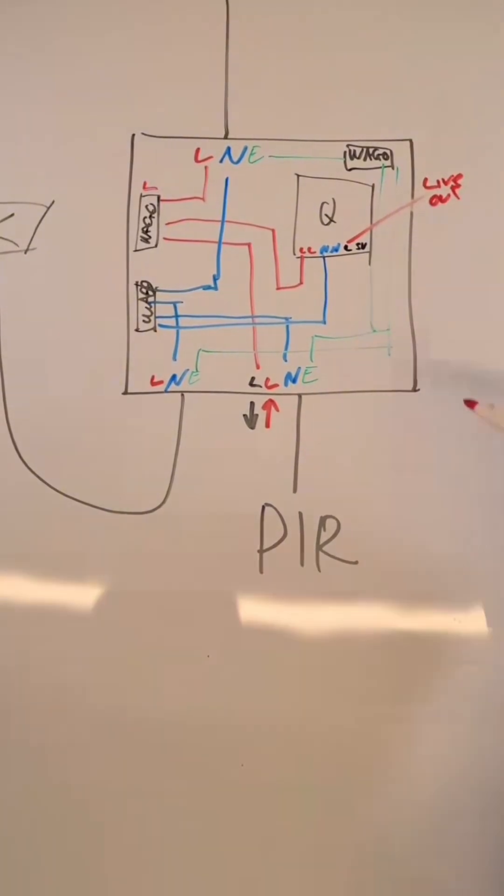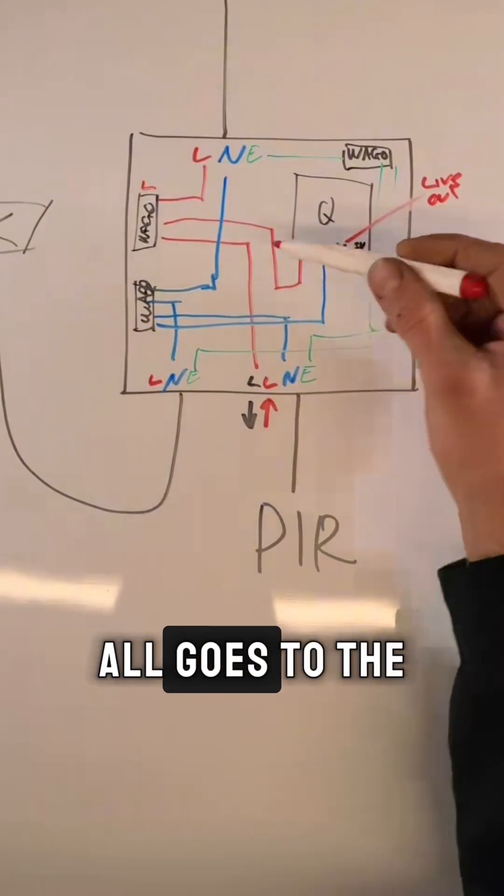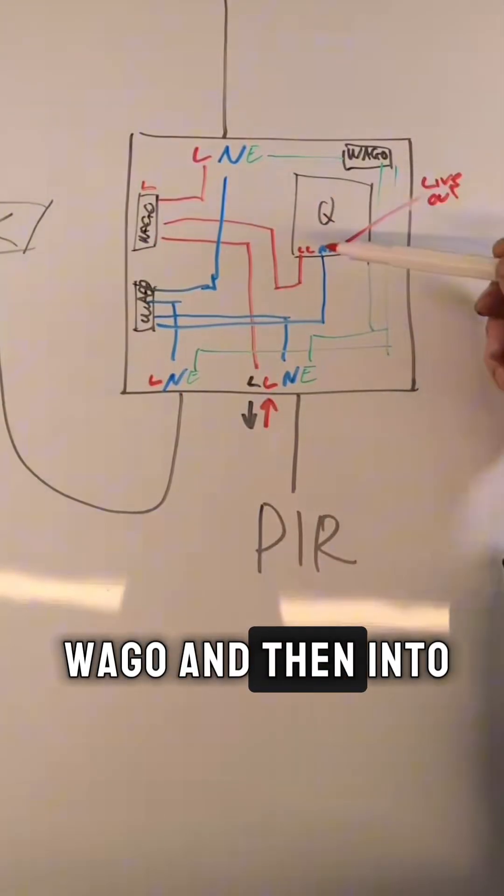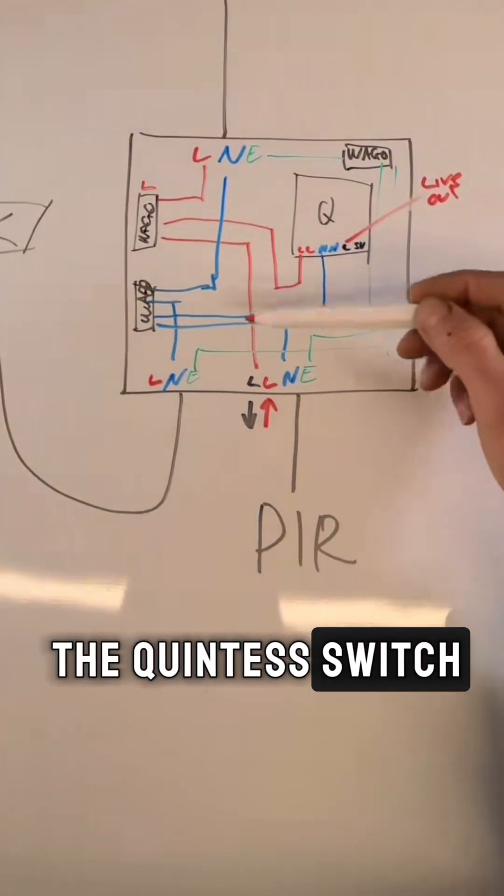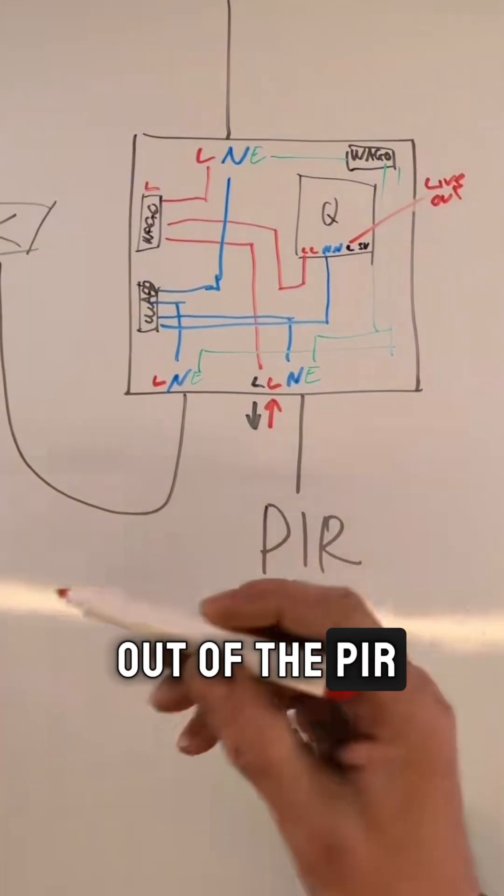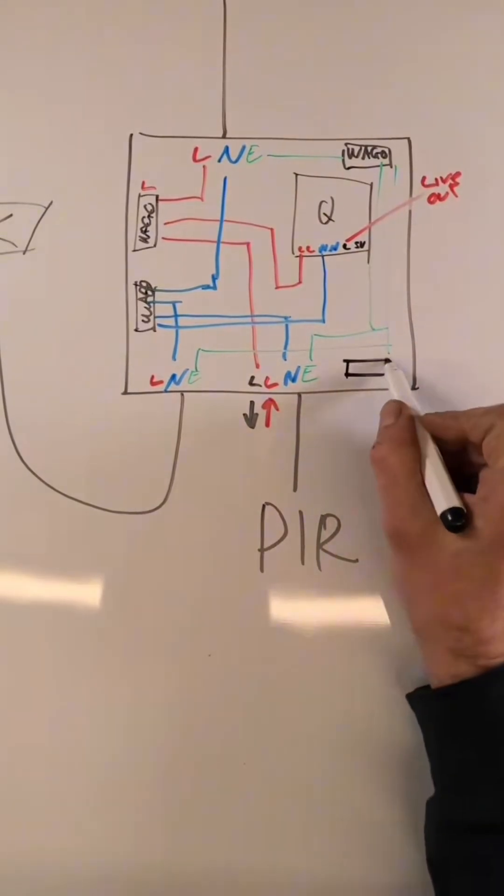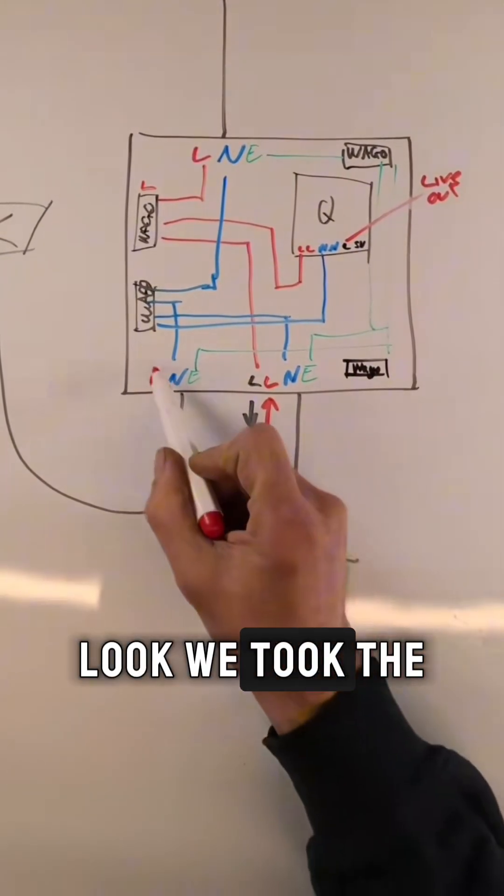So the live coming in all goes to the Wago and then into the Quinetic switch and then into PIR. Then from the out of the PIR, add another Wago that we took the live to.